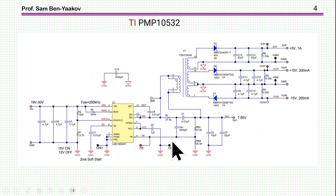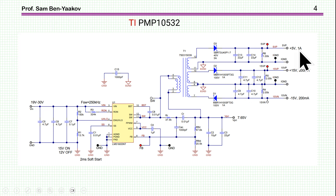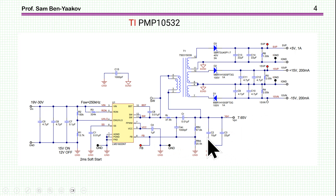Texas Instrument published a reference design for such a converter. Here we have a controller — it's a synchronous buck controller — and then we have this magnetic element, which you can call coupled inductors or a transformer. We have the primary here, and then we have a number of secondaries: plus-minus 15 volt at 200 milliamp, and then a 5 volt, 1 amp output. The feedback is coming from the primary side voltage, which is controlled, but there is no load here. So this is really a very unique application of the isolated buck.